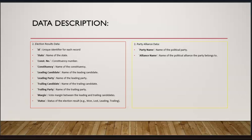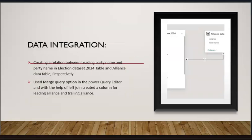The data description includes two types of data: the election results data and the party alliances data. The election result data includes the ID, state, constituency number, constituencies, leading candidate, leading party, trailing candidate, trailing party, margin status, etc. And the party alliance data includes the party name, alliance name, etc.